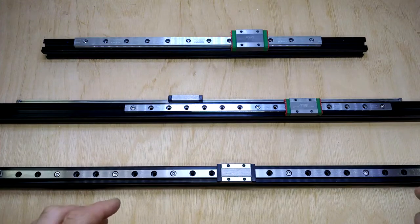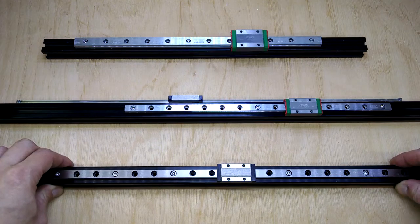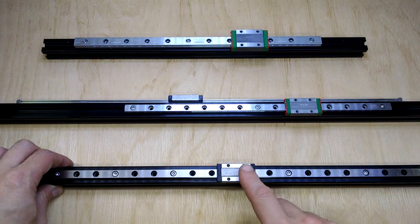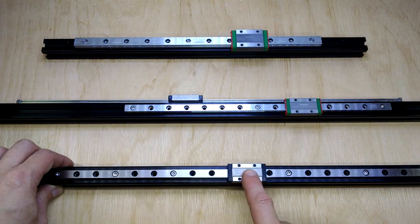This is just a quick update on the linear rails I've been using to build a 3D printer with. What I wanted to do was compare to some previous video. We've got the RobotDig high quality stainless steel rails here.